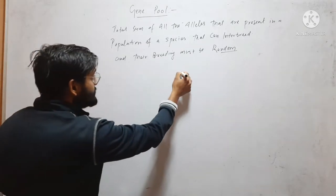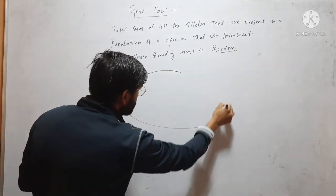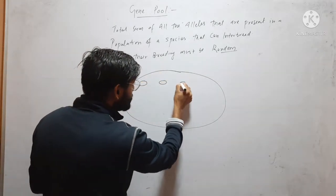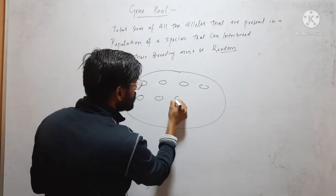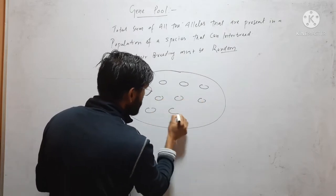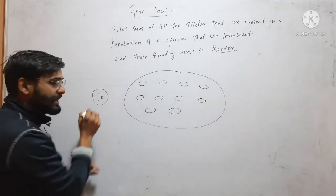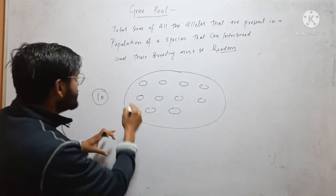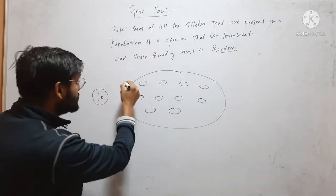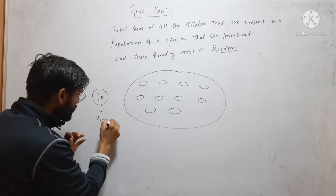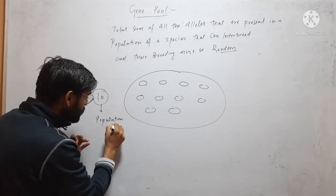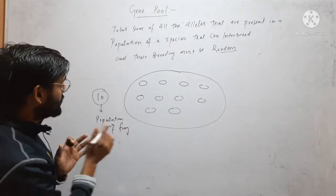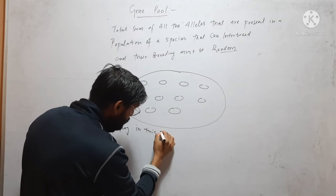Suppose this is a pond. In this pond, there is a population of frogs and the number of frogs is suppose 10. So there are 10 frogs in this pond — this is a population of frogs in this pond.